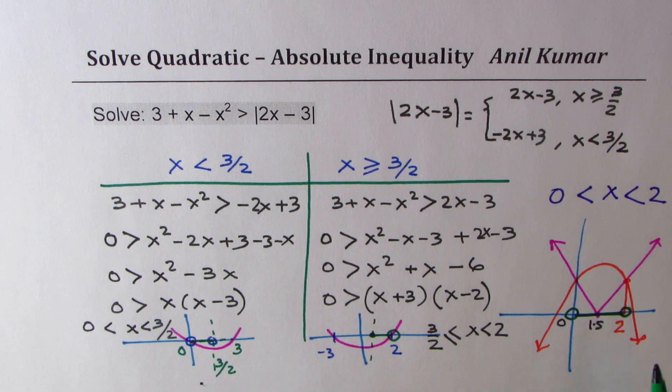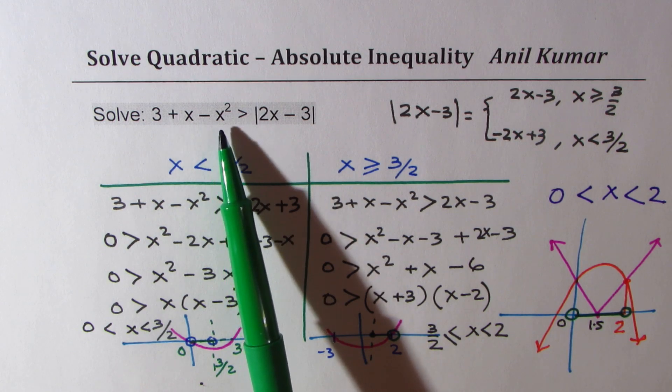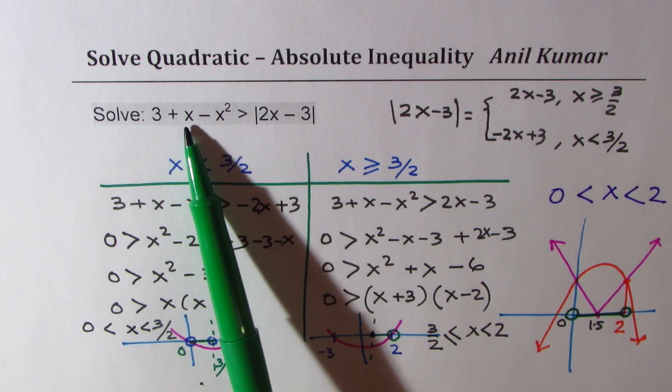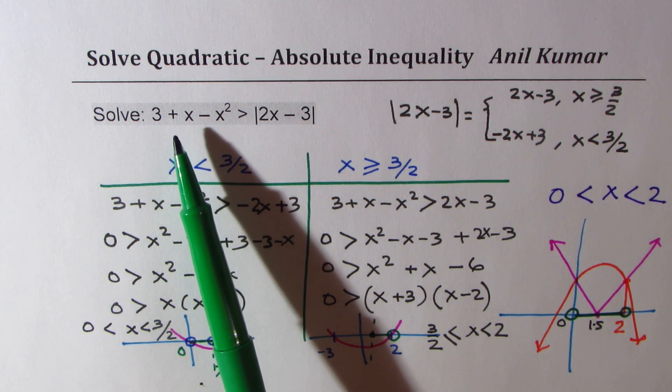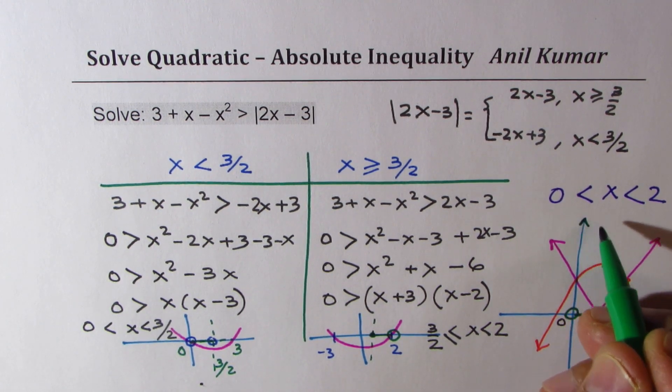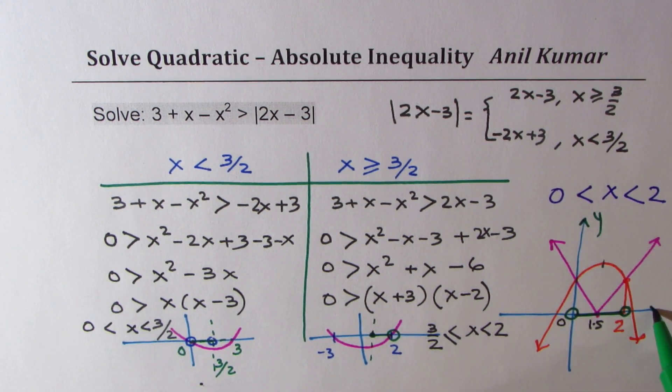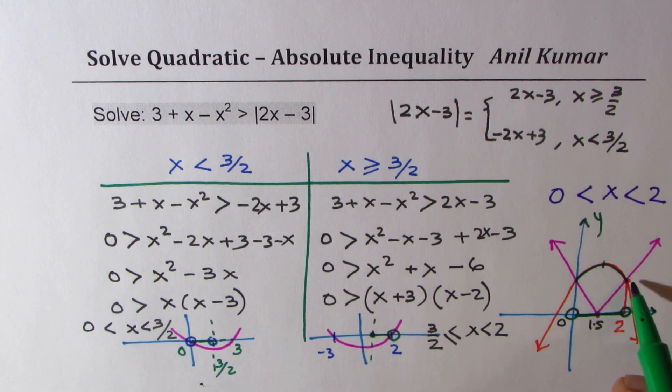So that becomes the solution of the inequality. So you could do it graphically also. So this particular equation will have vertex at minus b by 2a, right? So that is at half, 0.5. So this vertex will be at 0.5. And when you get a graph, which is kind of shown here. So that's an approximate sketch, which helps you to understand the information. So the parabola is above the absolute function in this interval, which is between 0 and 2.